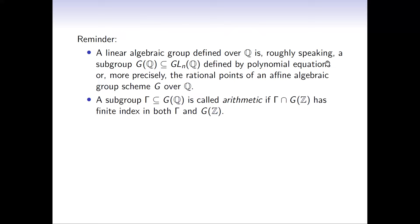Arithmetic subgroups of linear algebraic groups are defined as follows: you would like to take the integer points, but these may depend on the embedding into GL_N. Different embeddings give different Z-points, but the commensurability class is well defined. A subgroup is arithmetic if its intersection with the Z-points of G, where G is realized as a subgroup of GL_N, has finite index both in gamma and in G(Z). Morally, this wants to be the Z-points of the group.